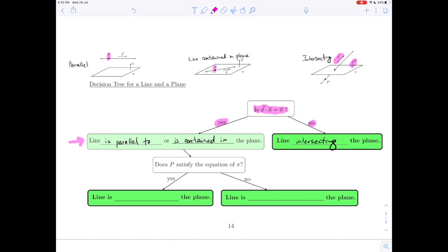If the point P is in the plane, well that means the entire line must be in the plane. So the line is contained in the plane, and if the point P did not satisfy the equation of the plane, we would have said that the line is parallel to the plane.